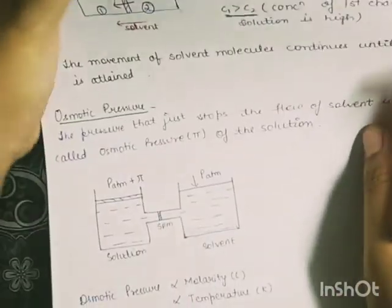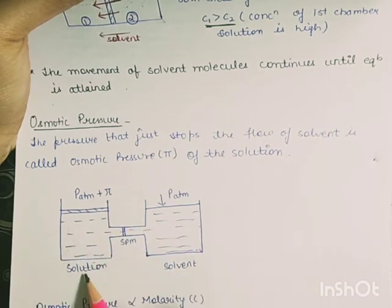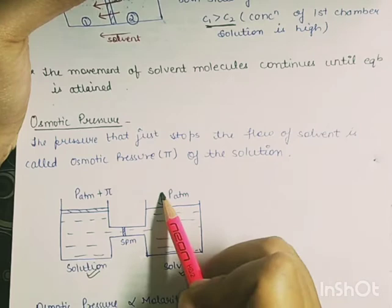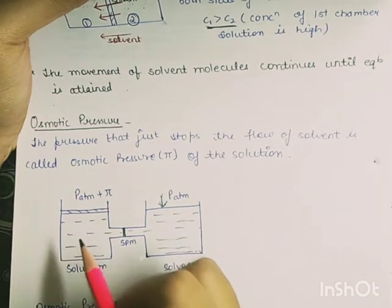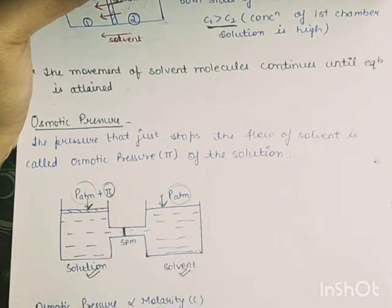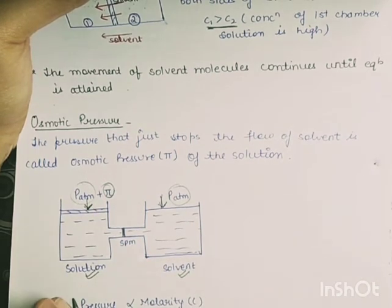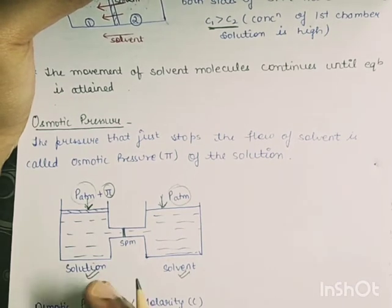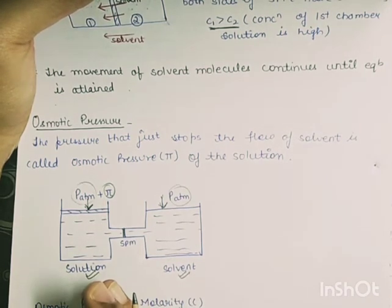Now let's discuss osmotic pressure. If one side has a solution and the other side has a solvent, separated by a semi-permeable membrane, osmotic pressure (π) is the excess pressure we apply on the solution side to just stop the process of osmosis. This pressure is known as osmotic pressure.